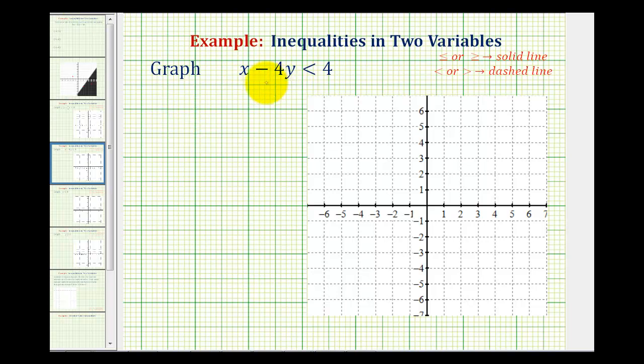So the first step is to treat this as if it was a line with the equation x minus 4y equals 4 and this is called the borderline. But before we graph this line we need to take a look at the original inequality symbol.